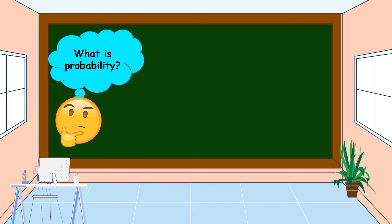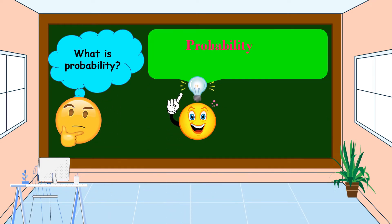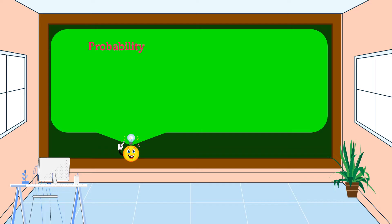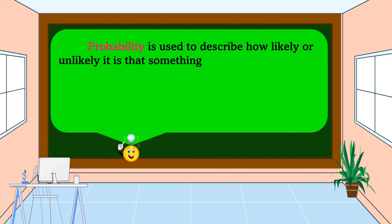What is probability? Probability is the mathematics of chance. Probability is used to describe how likely or unlikely it is that something will happen.